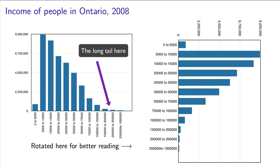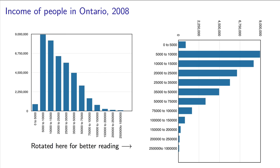We use the term 'skewed to the right' to describe this. The mass of the distribution is to the left, with a tail over on to the right. What would a box plot of these data look like? We will see more on this in the next video, as we focus on the concepts of means, medians, and deviations in the data.